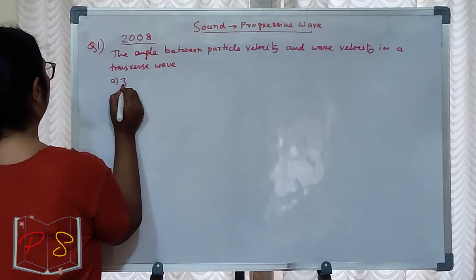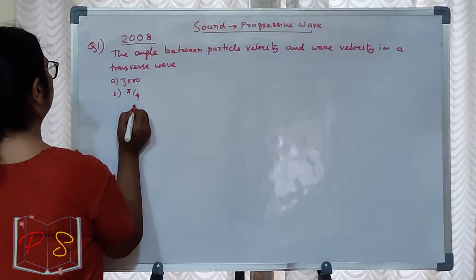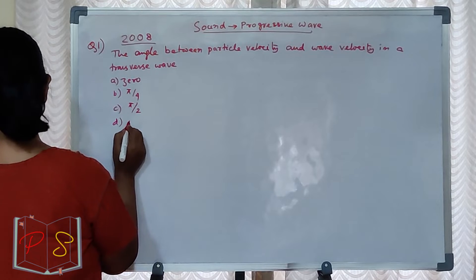The angle between particle velocity and wave velocity in a transverse wave is? What are the options? The options are pi by 4, pi by 2, pi.